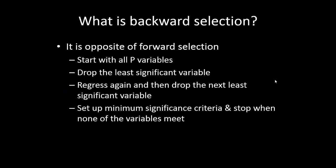The next question is: what is backward selection? Backward selection is actually the opposite of forward selection. In forward selection we started with a null model and step by step added more significant variables. In backward selection, we do the exact opposite — we start with all p number of variables, do the regression, and see that a number of these variables are very less significant.